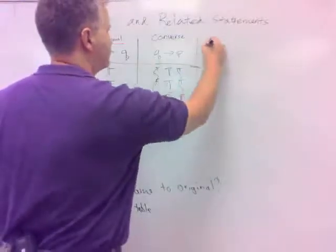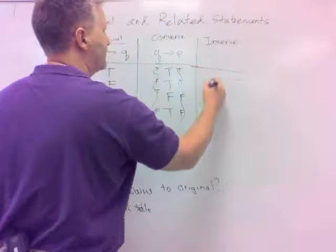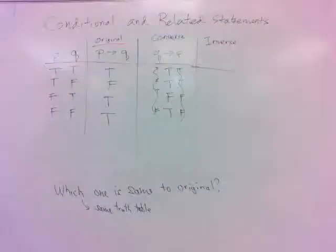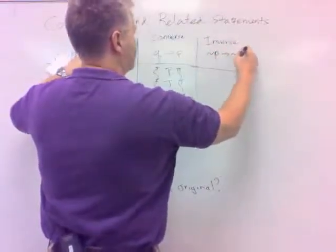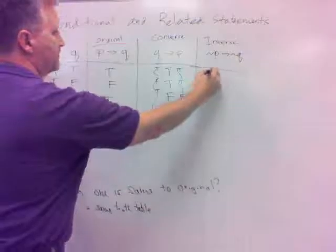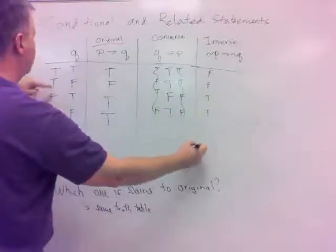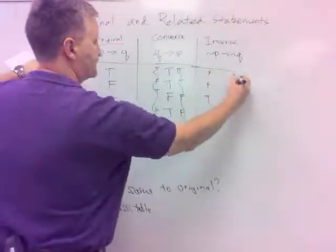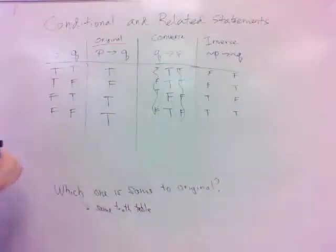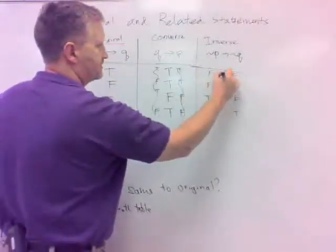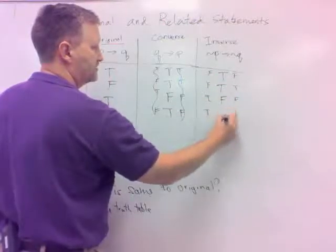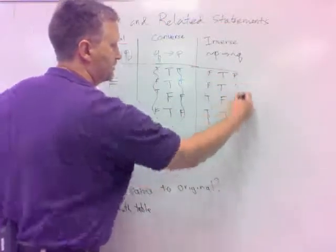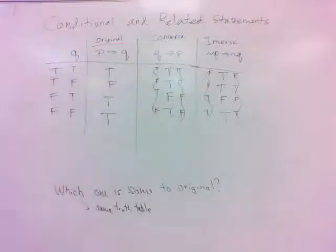What about the inverse? The inverse negates: not P arrow not Q. Not P would be F, F, T, T and not Q would be F, T, F, T. Arrowing those together: F arrow F is true, F arrow T is true, T arrow F is false, and T arrow T is true. Comparing to the original — not quite the same, is it? The inverse is also not equivalent.